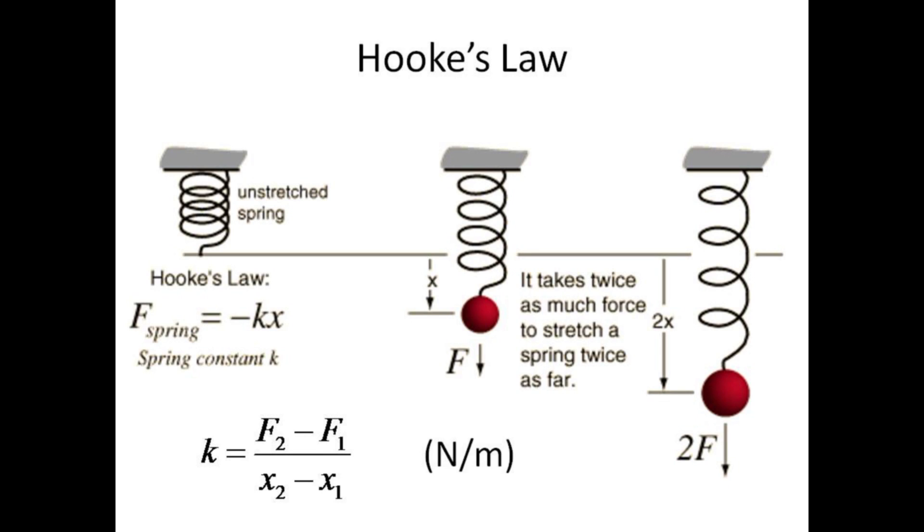A spring is the usual example of Hooke's law, with the restoring force equal to the product of k times x, where k is the spring constant and x is the amount of stretch. The spring constant is a measure of the stiffness of the spring and can be measured by applying two different forces and noting the amount of stretch.